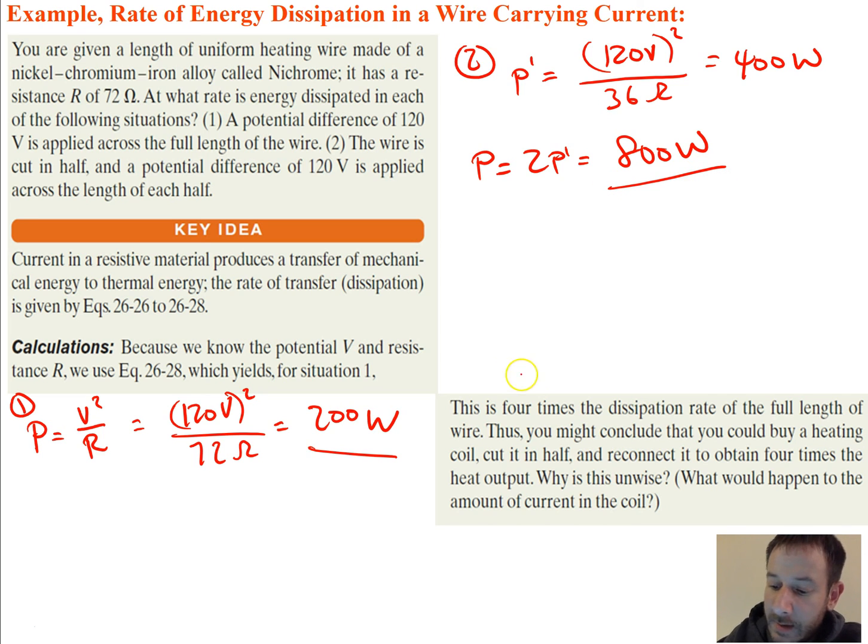So if you think about it, it's going to be 4 times the dissipation rate of the full length of wire. Thus, you might conclude that when you buy something like a space heater or some kind of heat coil, if you cut it in half, and reconnect it to obtain 4 times the heat output. But why is this unwise? What happened to the amount of current in the coil?